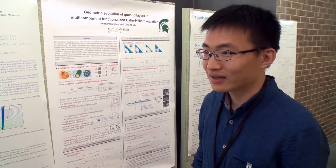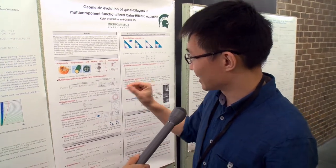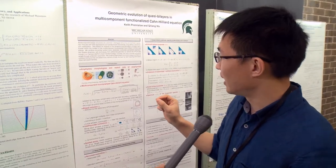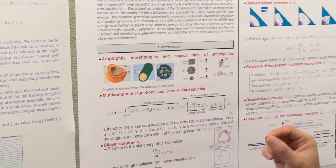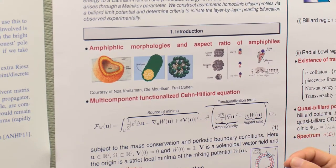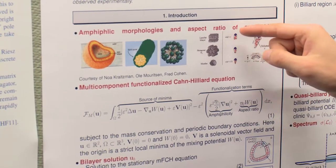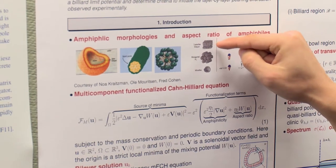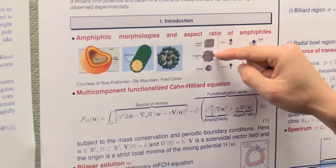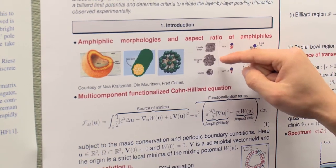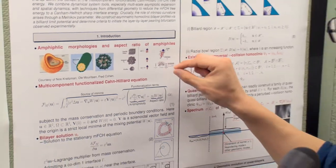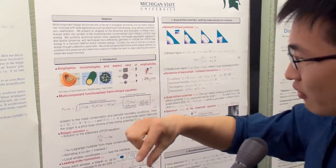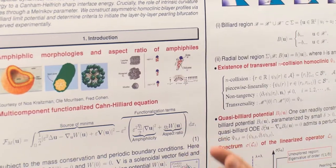Aspect ratio is another very important property of amphiphils — it plays a very important role in the selection mechanism of which self-assembly the amphiphil will form into. Depending on the shape of the hydrophobic tail of the amphiphil, you can get hexagonal structures and micelles. When you have a bilayer structure, depending on the aspect ratio, it can actually form into curved or uncurved bilayers.